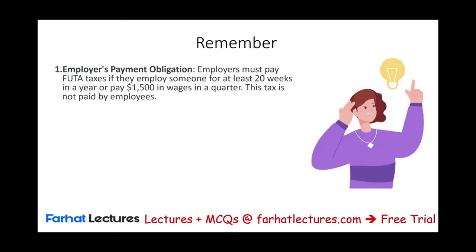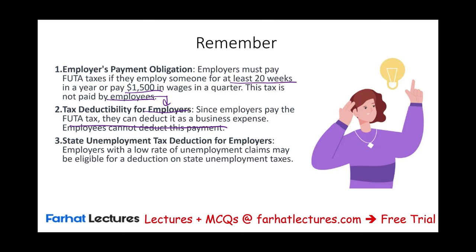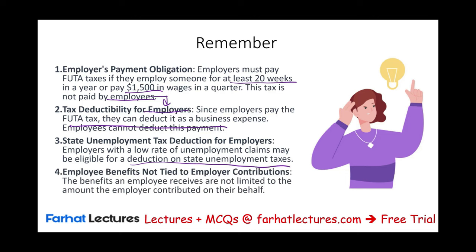A few key things to remember about FUTA: Employers must pay FUTA if they employ someone at least 20 weeks in a year or have $1,500 in wages in a quarter — not for themselves. This tax is paid by employers, not employees. Since employers pay FUTA, they can deduct it as a business expense; employees cannot deduct it since they never paid it. Employers with a low rate of unemployment claims may be eligible for a credit on state unemployment tax — if you're in good standing, you get a 5.4% credit. Employee benefits are not limited to how much the employer contributed on their behalf.